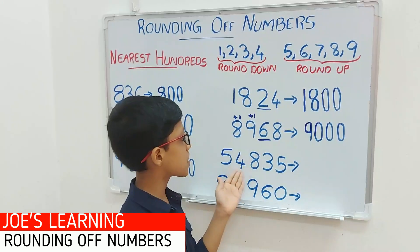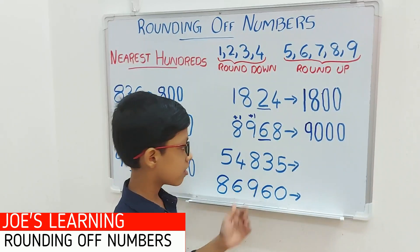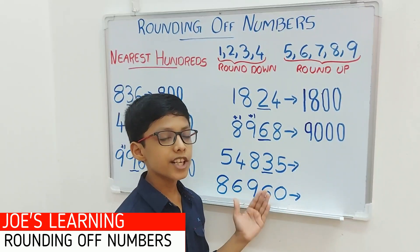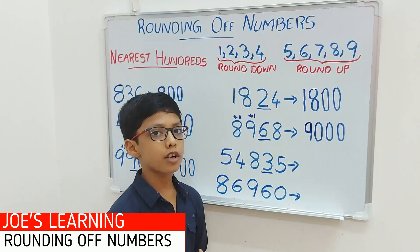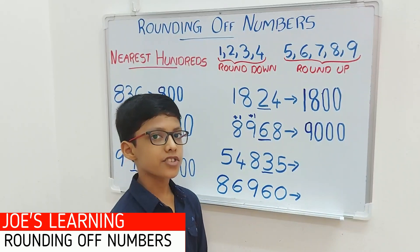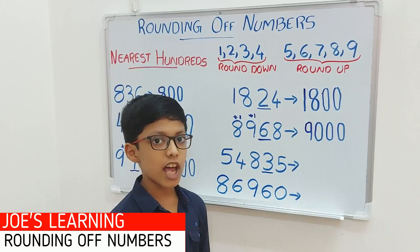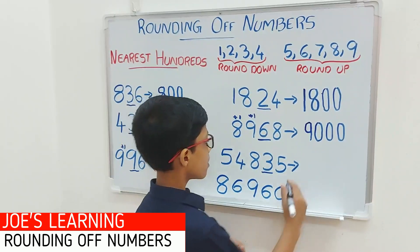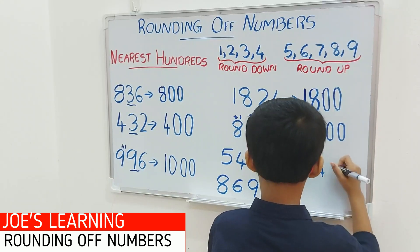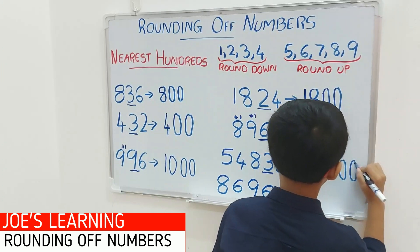Now let's take a look at this example, that is 54,835. First you have to look at the digit in the tens space — 3 is in the tens space. We compare it with 5: 3 is lesser than 5. So we have to put a 0 in the ones and tens space, leaving the rest of the digits as it is. So 54,835 rounded off to its nearest hundreds equals 54,800.